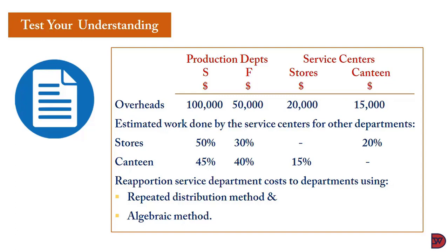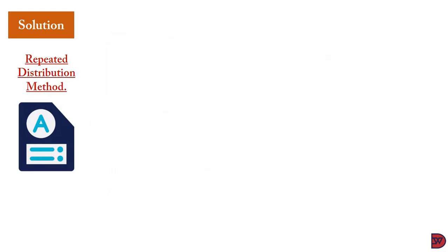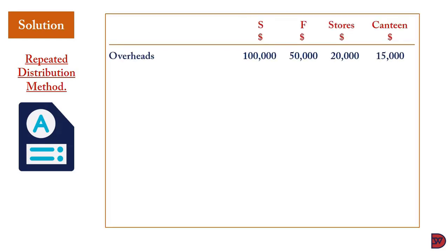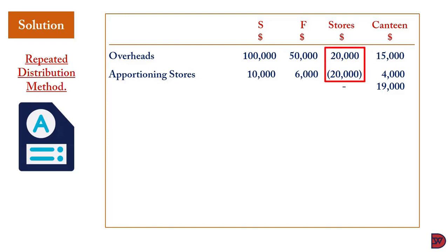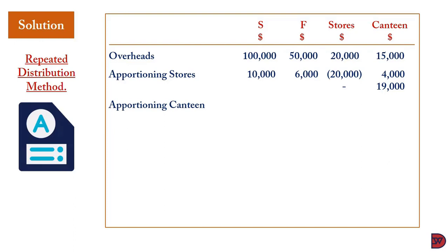For the repeated distribution method, we keep reapportioning service department costs until they all reach zero. Starting with apportioned overheads — sewing $100,000, finishing $50,000, stores $20,000, canteen $15,000 — we reapportion stores: 50/100 × $20,000 to sewing, 30/100 × $20,000 to finishing, and 20/100 × $20,000 = $4,000 to canteen. Stores becomes zero; canteen total is now $19,000.